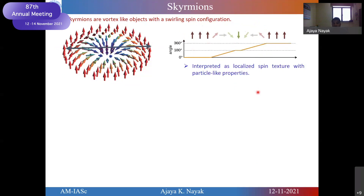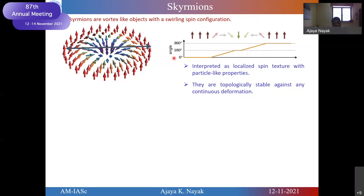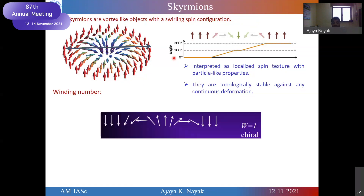This is a localized spin structure with a particular property: the whole spin structure behaves like a single object and is topologically protected against any continuous deformation. This means the structure cannot be continuously deformed — we cannot get a half-skyrmion or a quarter-skyrmion. Either the skyrmion exists, or after a certain energy threshold it completely annihilates. So it can be one or zero — we cannot get any state in between. They are always defined by a winding number.